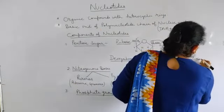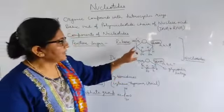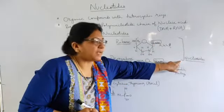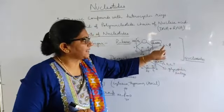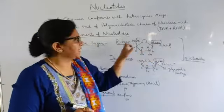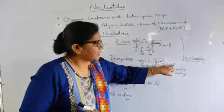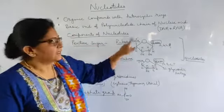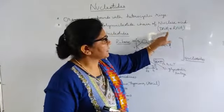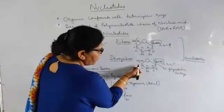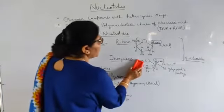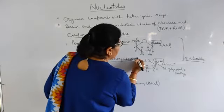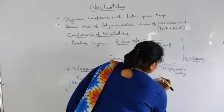When the sugar is combined with the base, the compound is known as a nucleoside. The base may be adenine, guanine, cytosine, or uracil in the case of RNA, and adenine, guanine, cytosine, or thymine in the case of DNA. This is because ribose is present in RNA, that is ribonucleic acid, and deoxyribose is present in DNA, that is deoxyribonucleic acid. Then, when the phosphate group is added at carbon number five, the compound is known as a nucleotide.